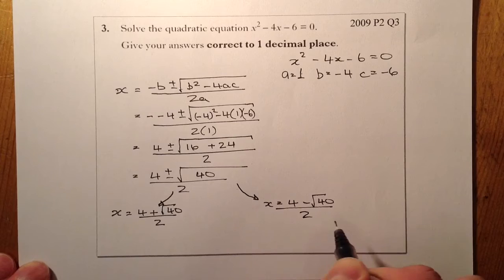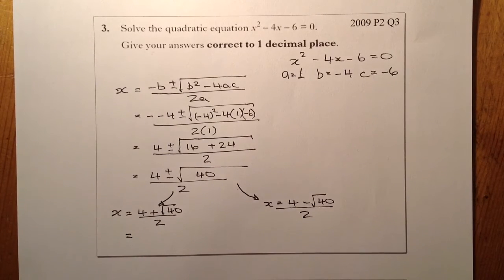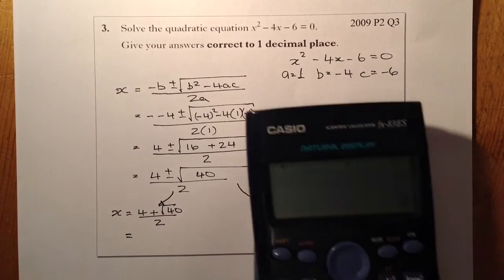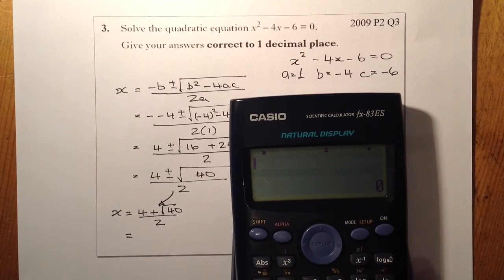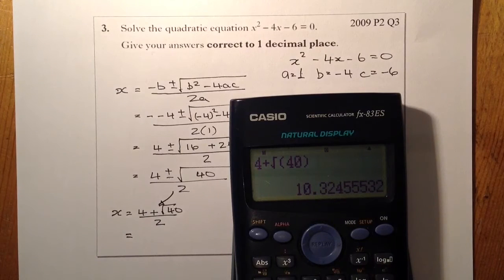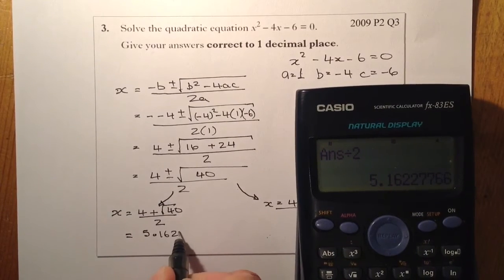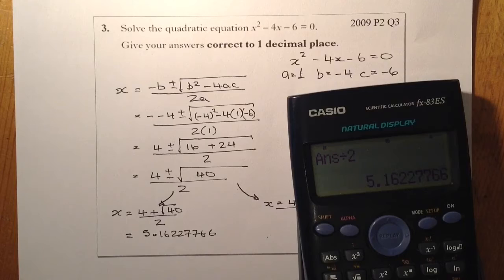The way I'm going to put that into the calculator is 4 plus root 40, close the bracket, press equals, that gives me 10.32. Now I'm going to divide it by 2, which equals 5.16227766. I have to round it to one decimal place so that'll give me 5.2.